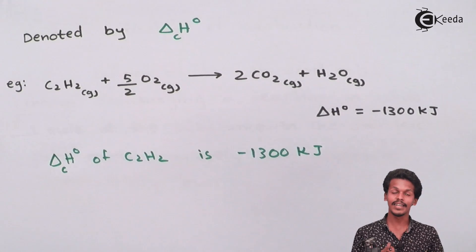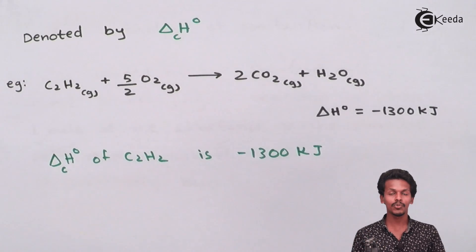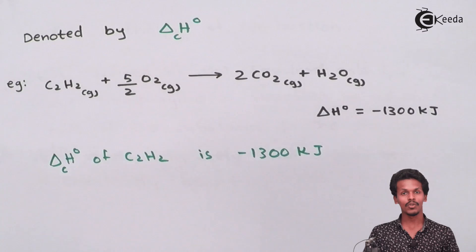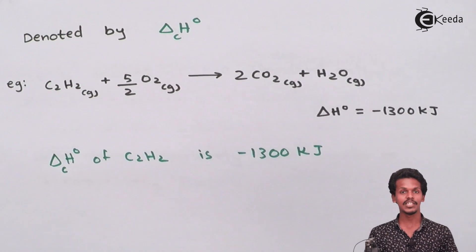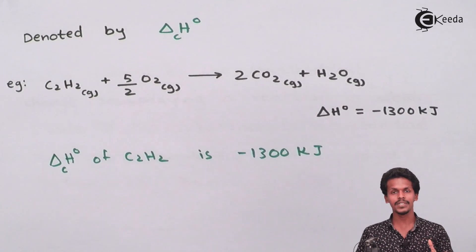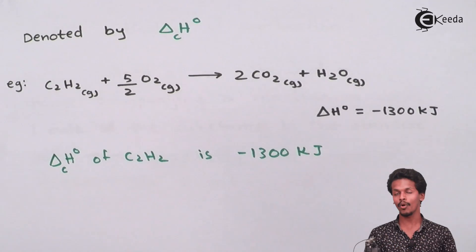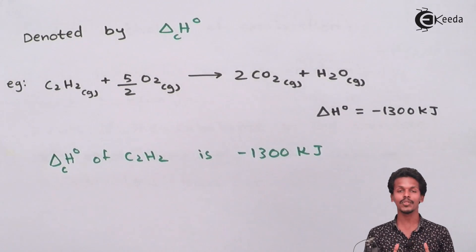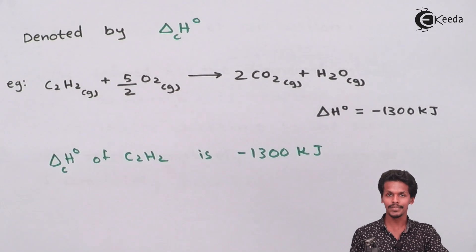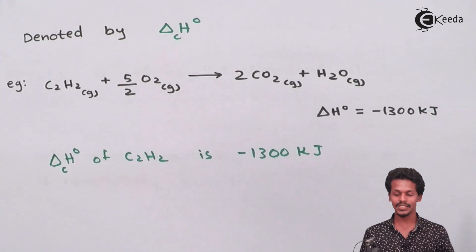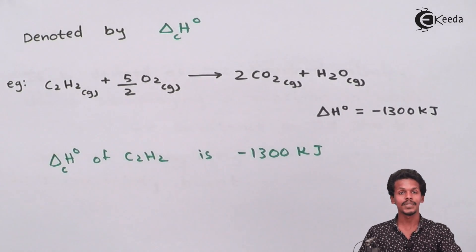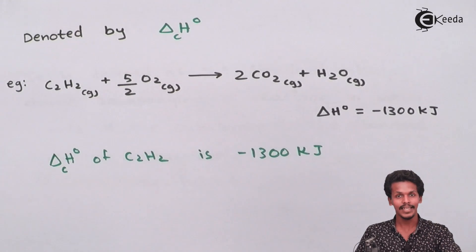This is the amount of energy released when C₂H₂, ethene, undergoes oxidation or combustion. To summarize: enthalpy of formation is the energy change observed when a substance is being formed in a reaction, while enthalpy of combustion is the enthalpy change observed when a substance reacts with oxygen during combustion. Thank you friends for watching this video. Share it with your friends and don't forget to subscribe to the Ekita channel.